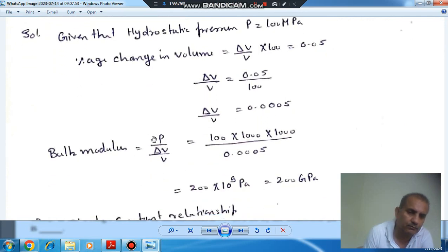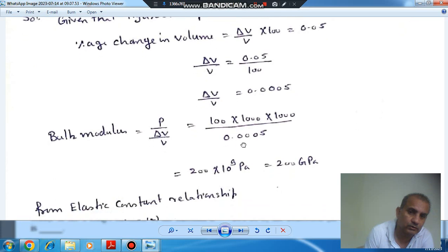And we know that bulk modulus is hydrostatic pressure divided by volumetric strain. So, bulk modulus comes out as 200 GPa.